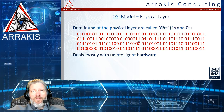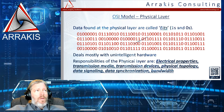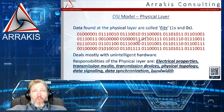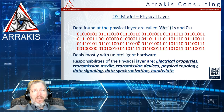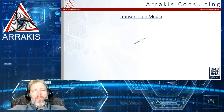The responsibilities of the physical layer include electrical properties — like what voltage is going over the wire — transmission media (wire or wireless), transmission devices like modems, physical topology (how the wires are laid out, star network, bus network, etc.), data signaling, synchronization, and bandwidth — which is simply how fast data is going.